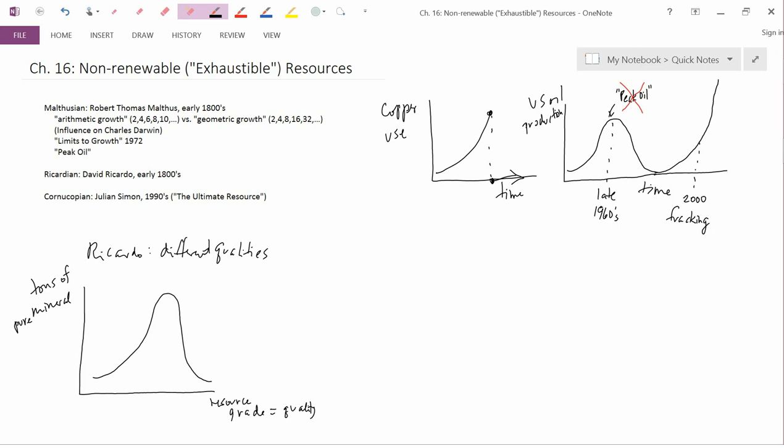There's a famous graph. It's actually a graph in your book, too. It's not a graph. It's a table. It's box 16.1, the McKelvey box. And it's a very nice illustration of Ricardian ideas.